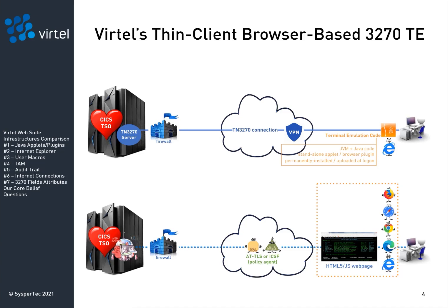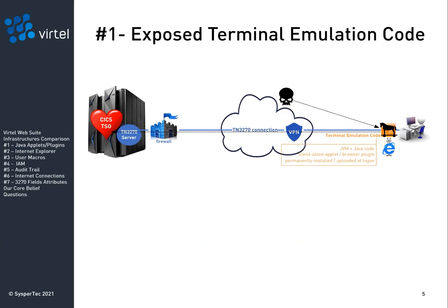Now let's review the seven vulnerabilities of legacy TN3270 emulators that Vertel eliminates. Vulnerability number one: exposed terminal emulation code. Java is known to be quite sensitive to cyber attacks. For years, users have had to apply periodic maintenance to address a never-ending string of Java security issues. Besides the complex and costly maintenance effort it requires, the risk is that the terminal emulation code running on user devices can get compromised and used for unauthorized access to mainframe assets.